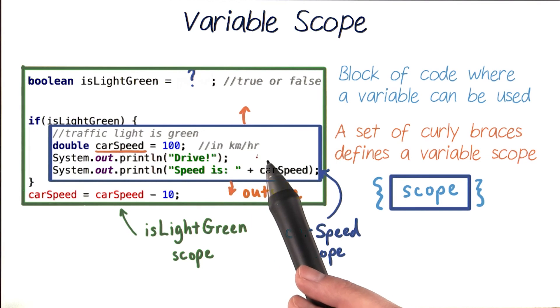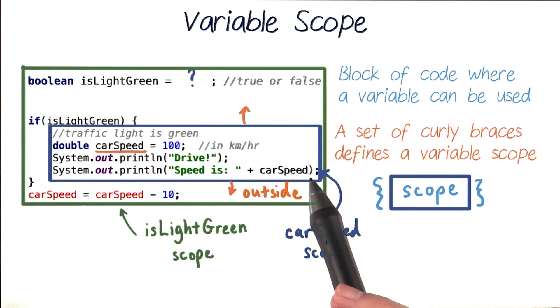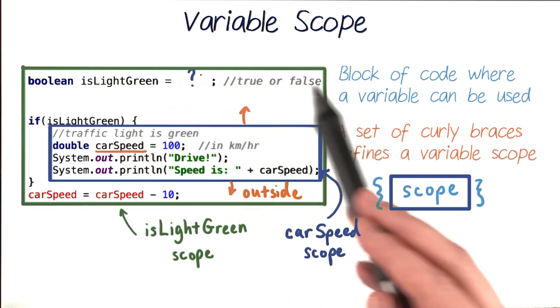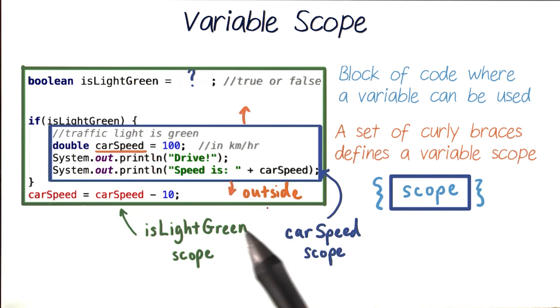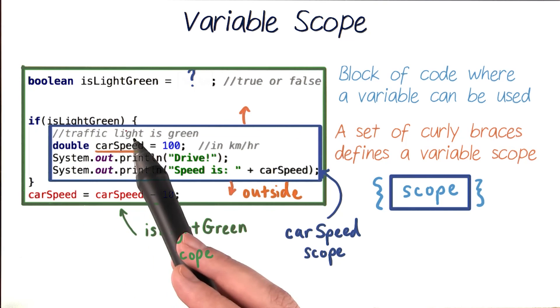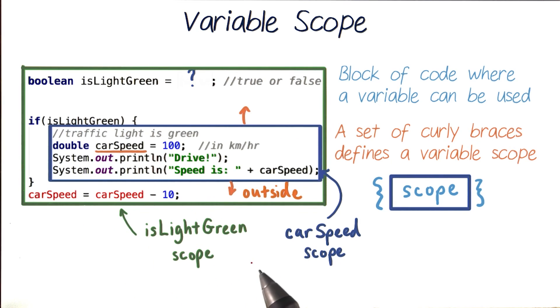Our CarSpeed variable, which is declared inside the if statement's curly braces, has a small scope—a small bounding wall that doesn't reach outside the if block of code. But isLightGreen, which we declared outside of any curly braces, has a big scope, a larger wall that contains our whole program. This lets us use and refer to our isLightGreen variable in our test condition. So keep this in mind as you write your if statements.